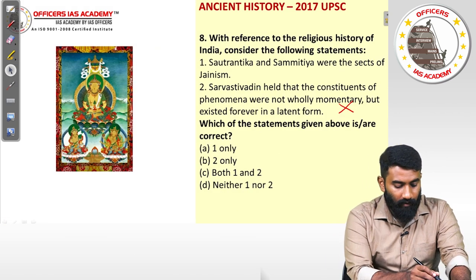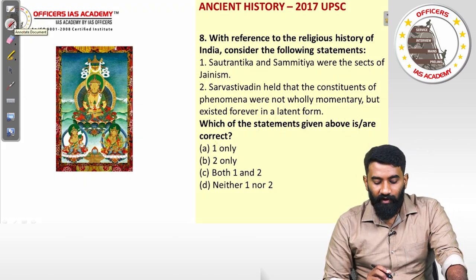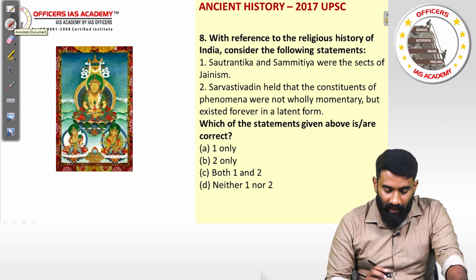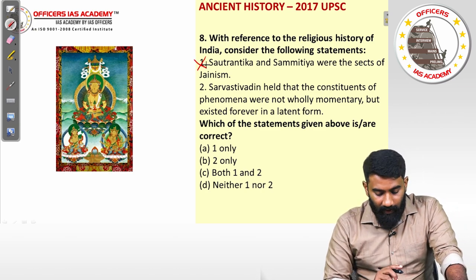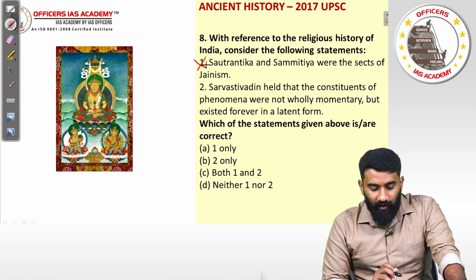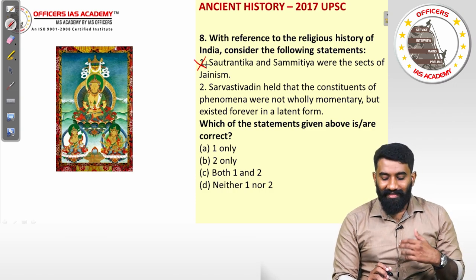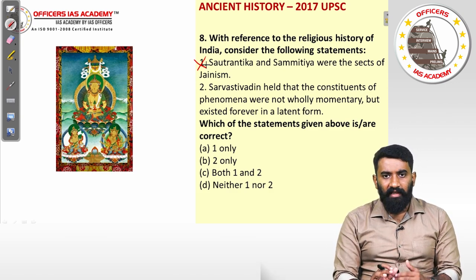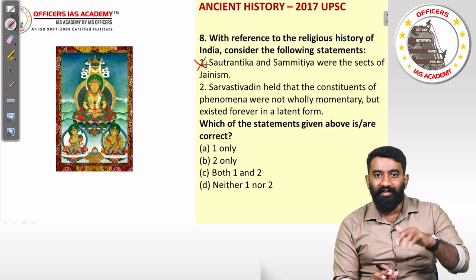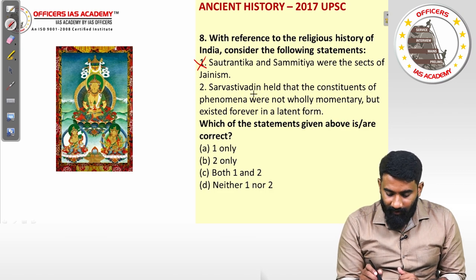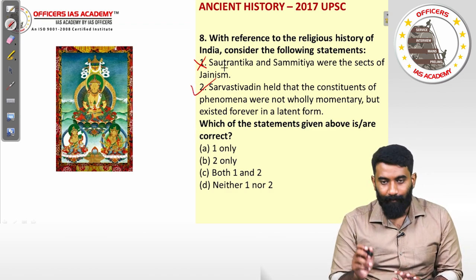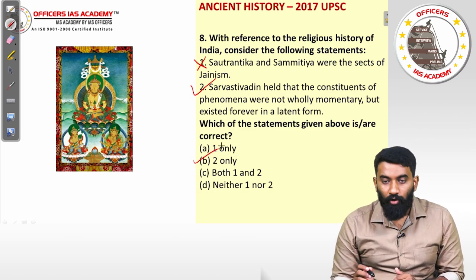Question eight: with reference to the religious history of India, consider the following statements. Sautrantika and Sammitiya were sects of Jainism — that is incorrect; they are sects of Buddhism. The Sarvastivadin held that the constituents of phenomena were not wholly momentary but existed forever in a latent form, meaning things existed before the present, exist now, and will exist in the future — that statement is correct. So the first statement is wrong and the second is correct. The answer is option B: two only.